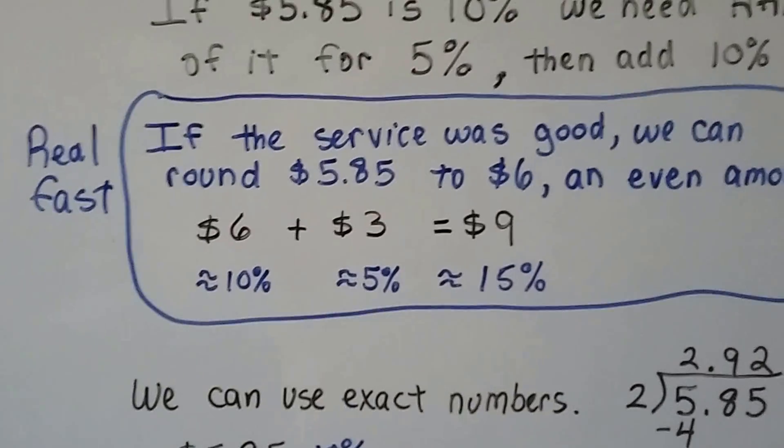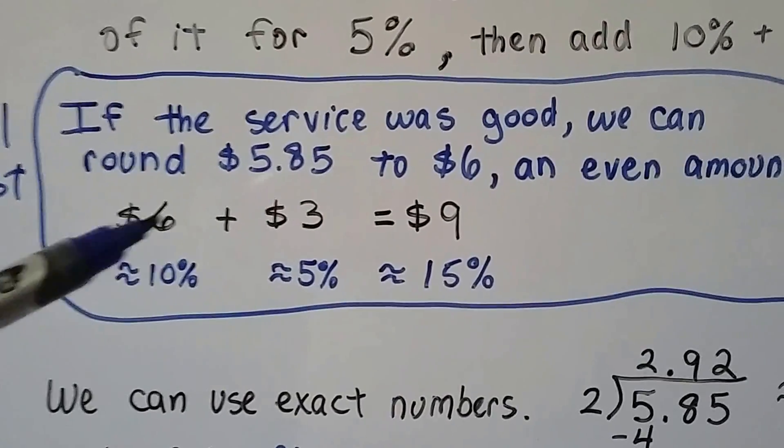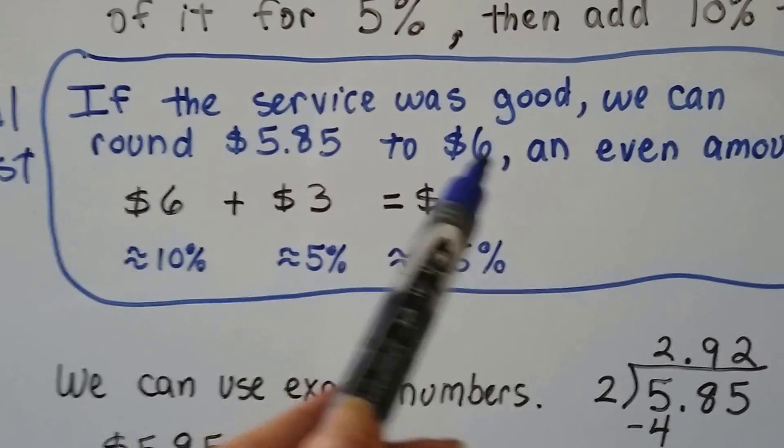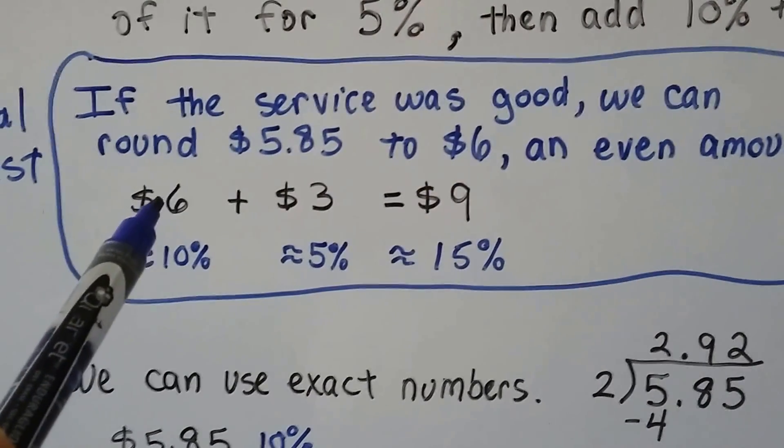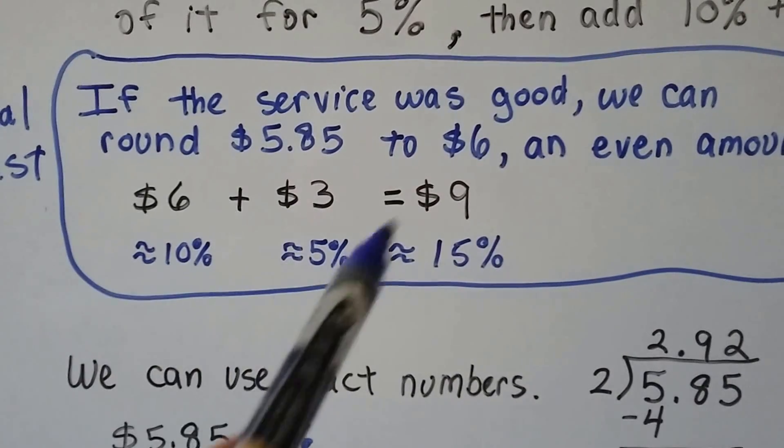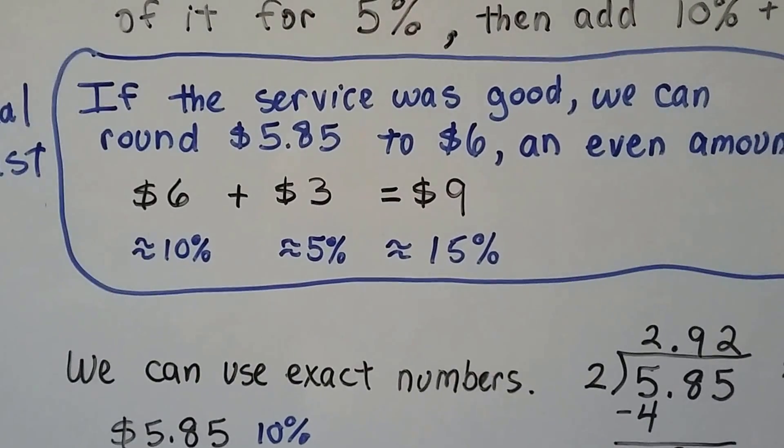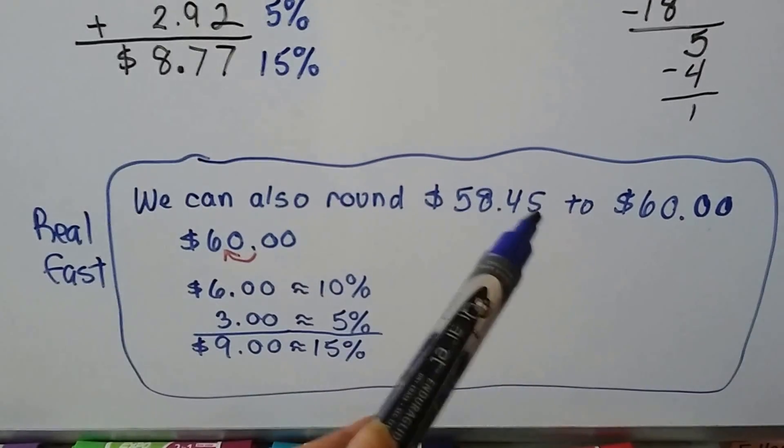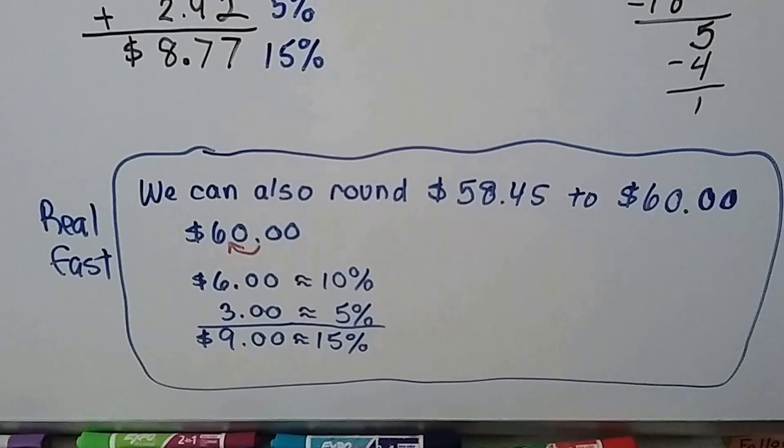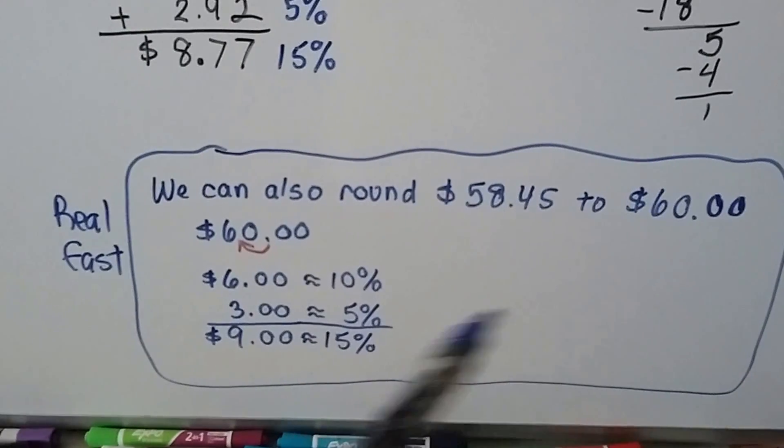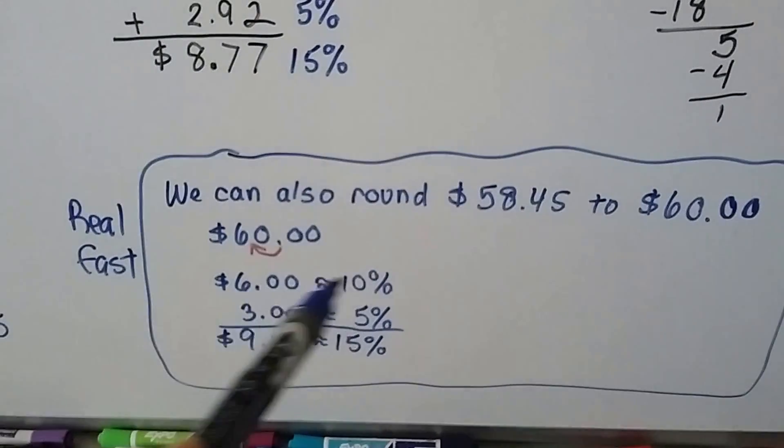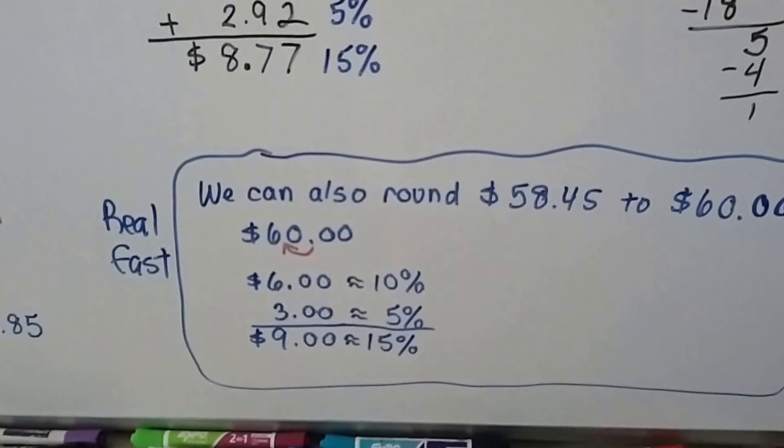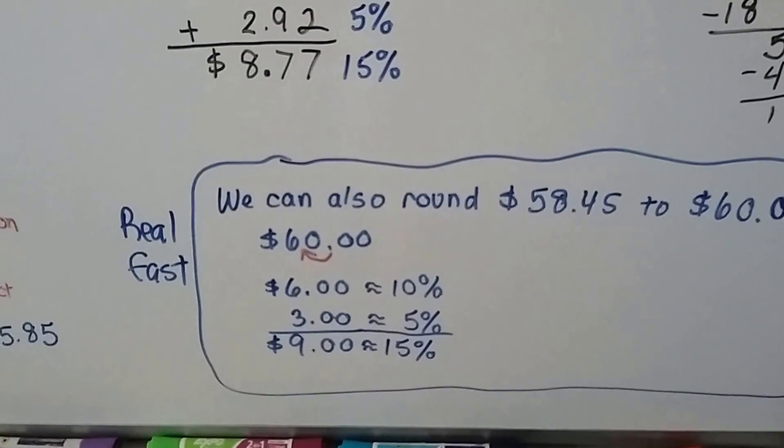Now, here's the real fast way. If the service was really good, we can round that $5.85 to $6, an even amount. Half of that would be $3, so it would be about $9. See? We can also start from the beginning and round $58.45 up to $60. Move the decimal place over so that we've got $6 for our 10%, $3 for the 5%, add them together, and we still get about $9. Okay?